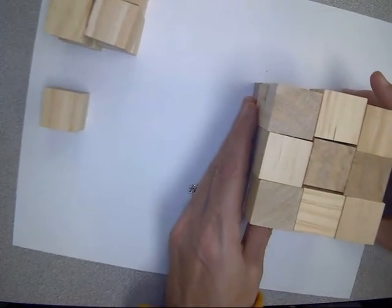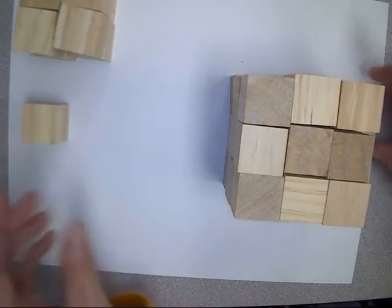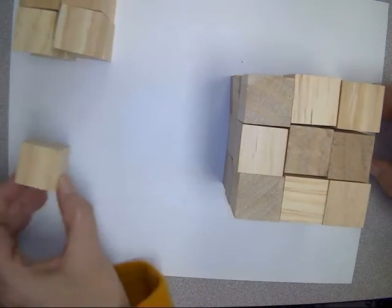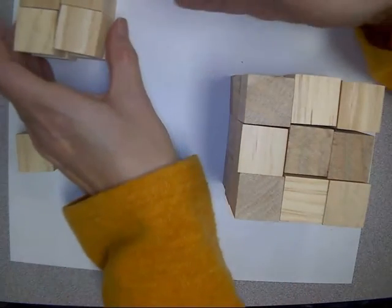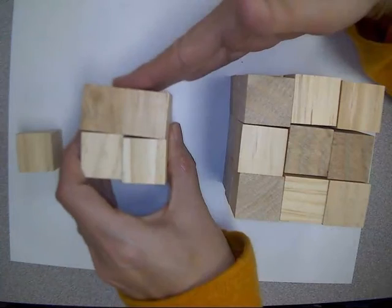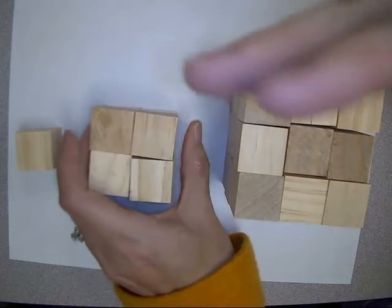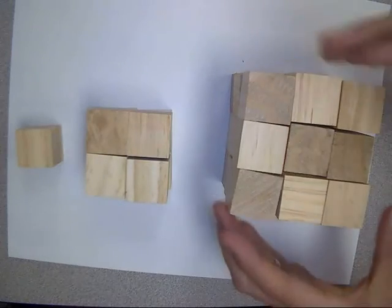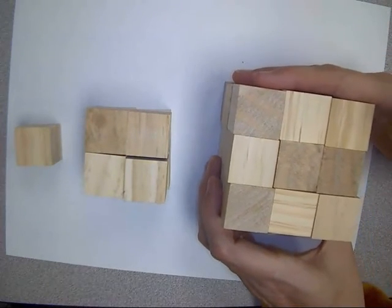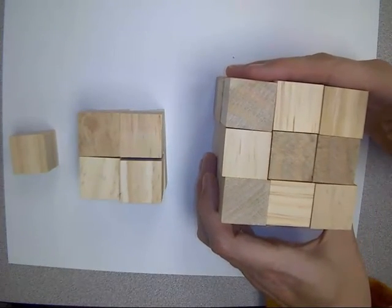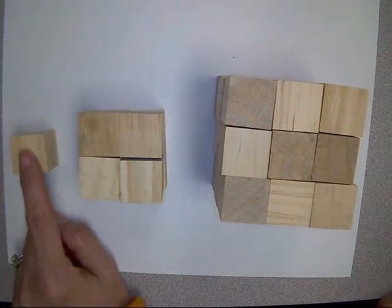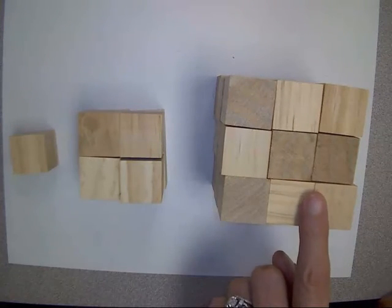This one used twenty-seven cubes. So, here we only used one and we made a cube, and then we used eight to make this cube, and then we used twenty-seven to make the bigger one. So, it's going from smallest to largest.